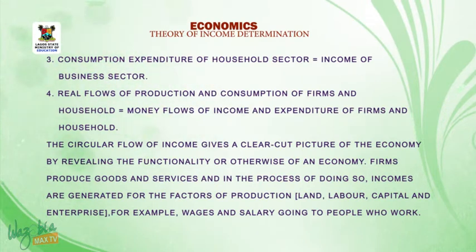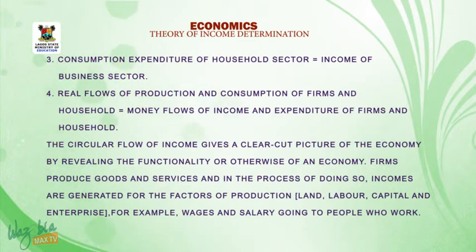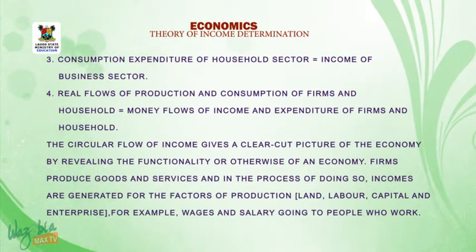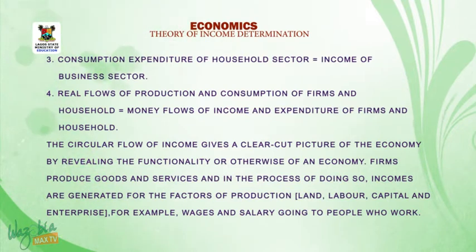The circular flow of incomes gives a clear picture of the economy by revealing the functionality or otherwise of an economy. Firms produce goods and services and in the process, incomes are generated for the factors of production: land, labor, capital and enterprise. For example, wages and salary going to people in work.